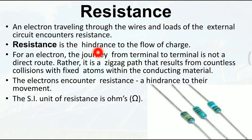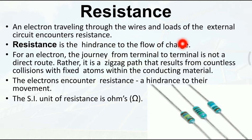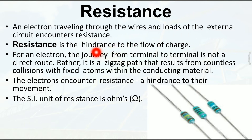Resistance is the hindrance to the flow of charges. Resistance आपको add नहीं करना पड़ता - यह एक natural phenomenon है। जैसे energy pass होती है तो energy का loss होता है, उसी तरह circuit में से जब electricity pass होती है तो कुछ electricity का wastage हो जाता है। Circuit के अंदर problems आ जाती हैं - that is resistance, जो flow के अंदर hindrance generate करता है।